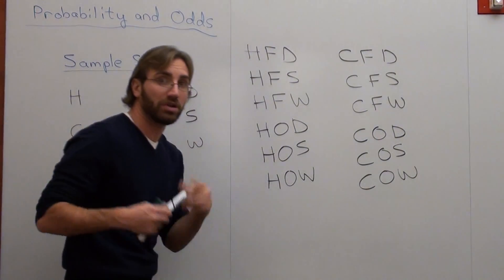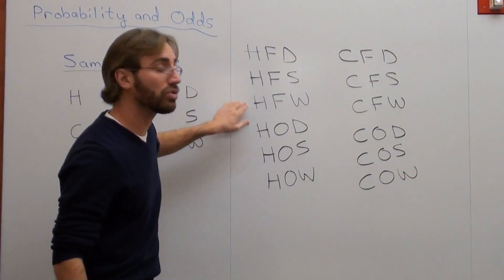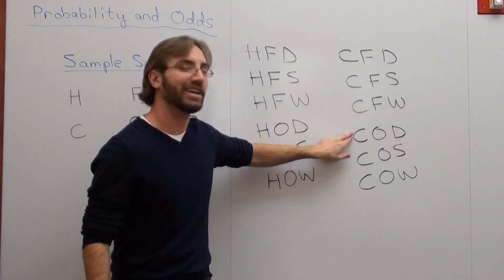And there you go. If you count up all the options that you can make, here's one, two, three, four, five, six, seven, eight, nine, ten, eleven, twelve.